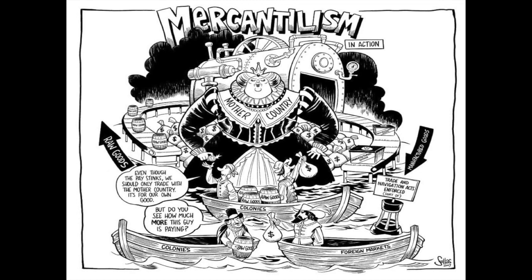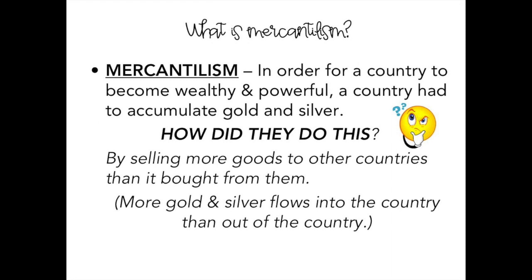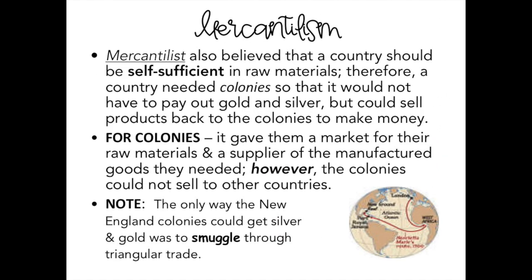We're talking about mercantilism again, which is kind of like a refresher. Remember, that is making money for the mother country. In order for a country to become wealthy, they have to accumulate gold and silver. They do that by selling more goods to other countries than they buy from them. England has to sell more goods to other countries than they buy from them, and they use the colonies in order to do this. The colonies provide them raw materials, and they in turn use those raw materials to make manufactured goods.